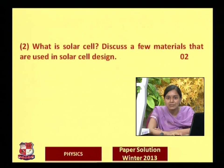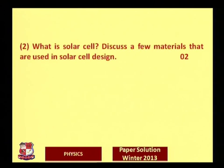A solar cell works on the principle of the photovoltaic effect. When photons are incident on the solar cell, they will be absorbed if their energy matches the energy band gap of the material. An electron-hole pair is generated, and due to the junction barrier this pair is separated, creating a potential difference additional to the junction barrier potential, which can act as a battery or external power supply.